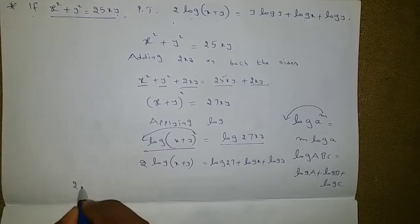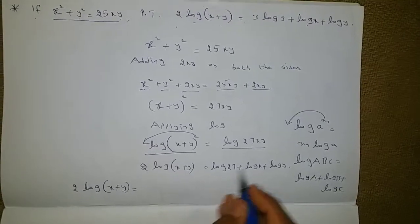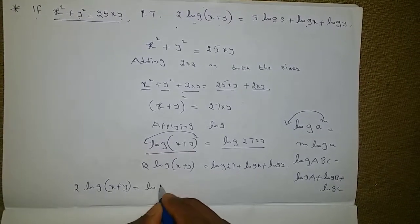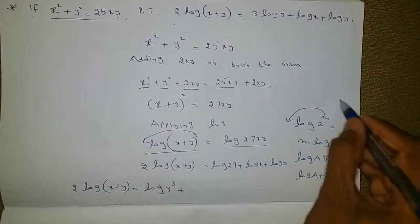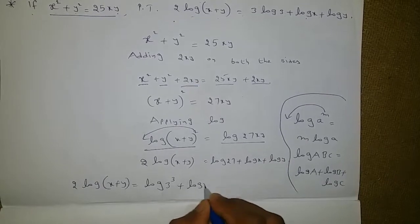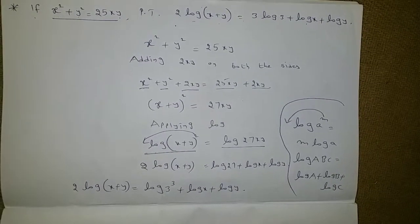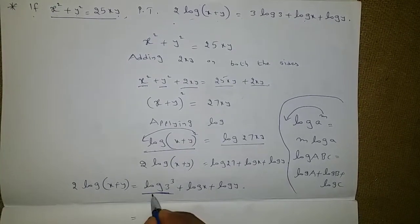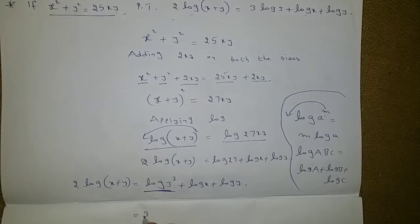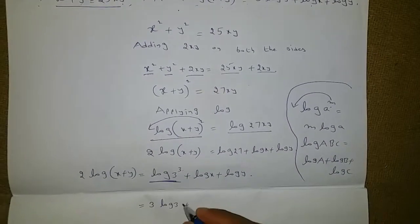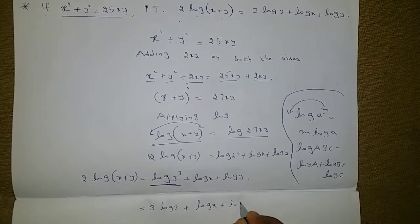Left side as it is: 2 log(x+y) = log 27 + log x + log y. Now log 27 is in the form of log(a^m), so again the power will come to the front. It will become 3 log 3 + log x + log y.